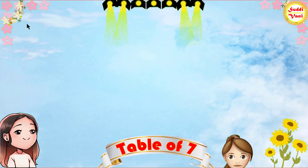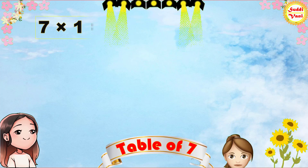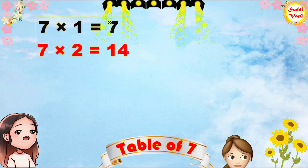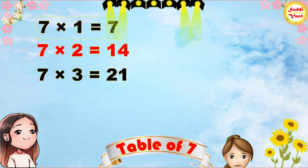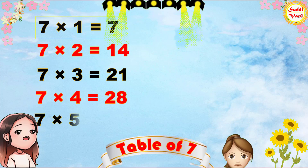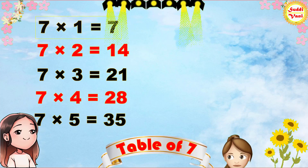Once again. 7 1s are 7, 7 2s are 40, 7 3s are 21, 7 4s are 28, 7 5s are 35.